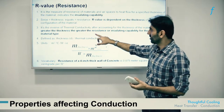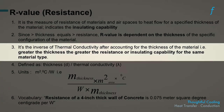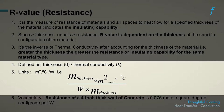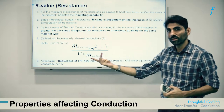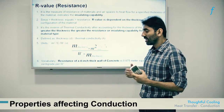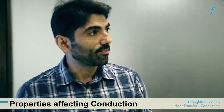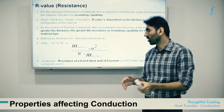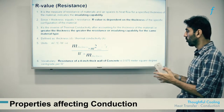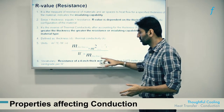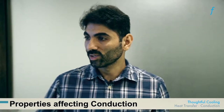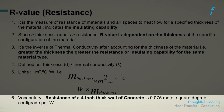Resistance is the inverse of thermal conductivity after accounting for the thickness of the material — the greater the thickness, the greater the resistance. It is classically defined as the thickness of the material divided by the thermal conductivity, and the units are the inverse of those used for thermal conductivity. In practice, resistance is conveyed by including the thickness: for example, the resistance of a 4-inch thick wall of concrete is 0.075 meter square degree centigrade per watt.